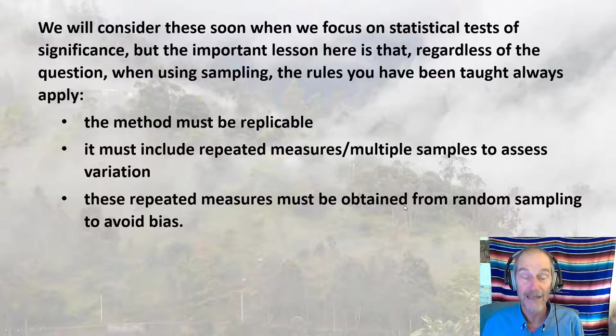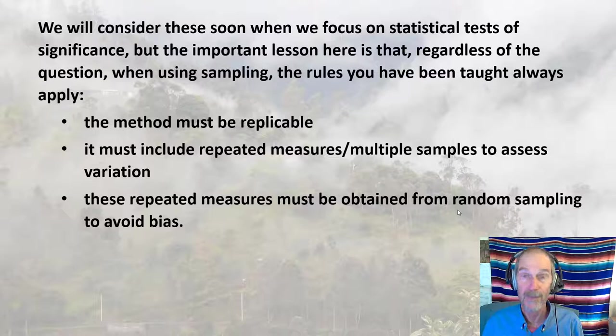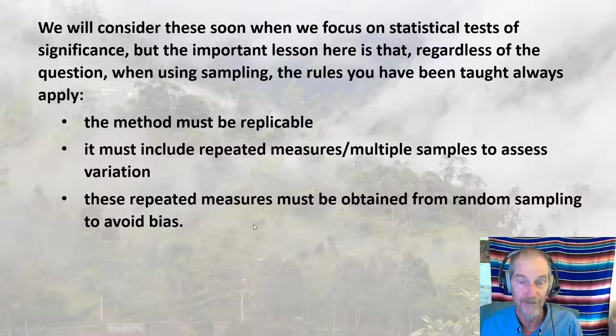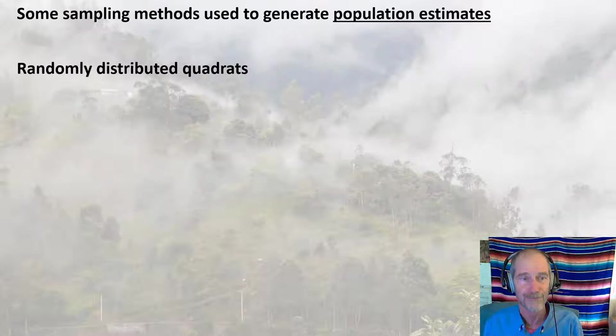Lastly, these repeated measures must be obtained from random sampling to avoid bias. Truly random sampling means the position of where you sampled was determined by a random number generator — not by you throwing something to the side or thinking it's random. 'This is just random' is not actually random, because your brain subconsciously has all kinds of bias. Make sure you understand these three components of statistical tests — definitely test question material.